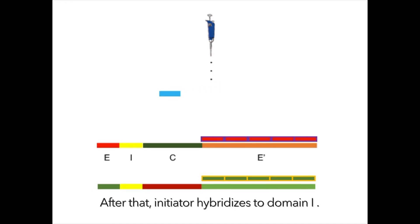After that, initiator hybridizes to domain I. Then DNA polymerase starts elongation reaction. I see.